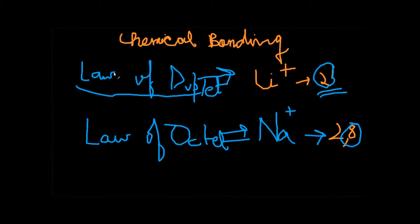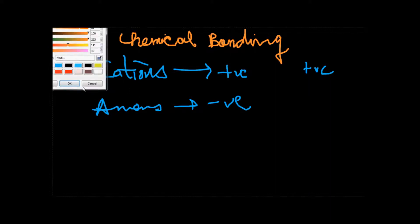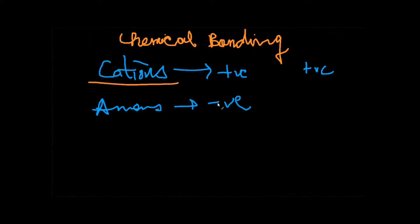Now we're going to come to formation of ions. There are two types of ions: cations and anions. Cations are positively charged, whereas anions are negatively charged. When an atom gives up an electron, it acquires a positive charge and is called a cation. For instance, a chlorine atom, if it gains an electron to attain a stable configuration, acquires a minus charge and is known as an anion.